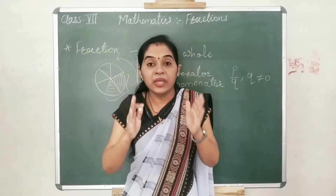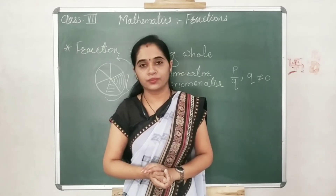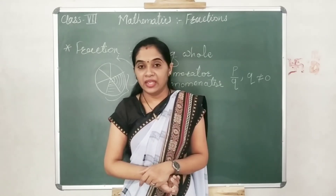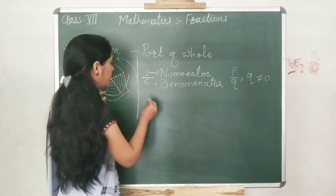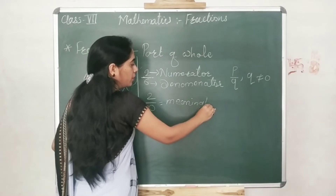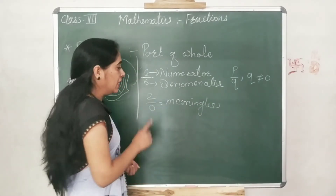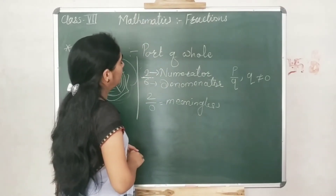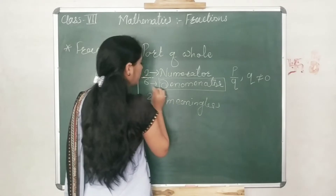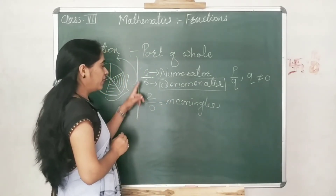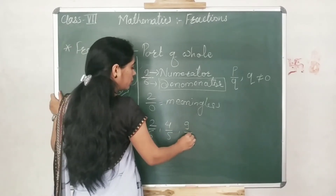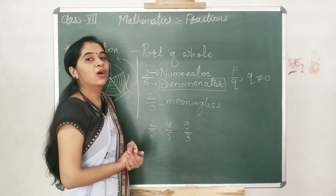The denominator is never zero because, as you saw in whole numbers, the properties of division tell us that when you divide any whole number by zero — for example, two upon zero — the answer is meaningless. So there is no such fraction, and that is why when we write a fraction, the denominator is not equal to zero. We read fractions as: 2 upon 6, 4 upon 5, 9 upon 3, and so on.